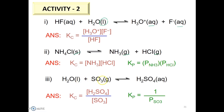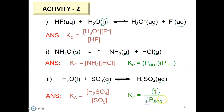(3) H2O liquid plus SO2 gas produces H2SO4 aqueous. The Kc expression is concentration of H2SO4 over concentration of SO2, since Kc only involves substances in the aqueous and gas phases. For Kp, there is no compound on the product side in the gas phase, so Kp equals 1 over the partial pressure of SO2 gas.